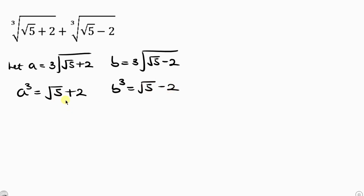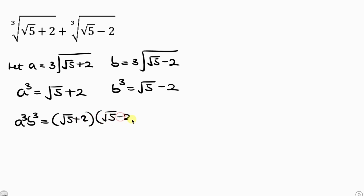Notice that these two expressions are the same — the only difference between them is the signs: this is plus and this is minus. So when I multiply these two expressions, I'm going to have a difference of two squares. Multiplying A cubed times B cubed gives the square root of 5 plus 2, times the square root of 5 minus 2. This is difference of two squares, which equals the square root of 5 squared minus 2 squared.